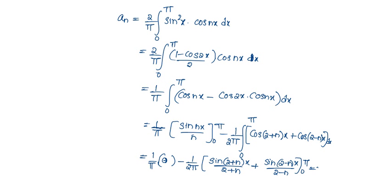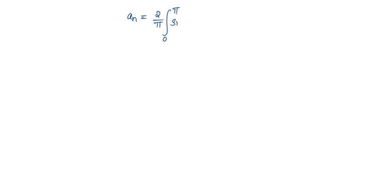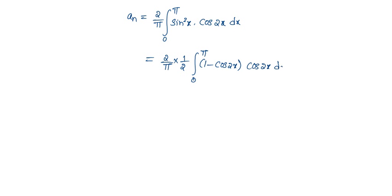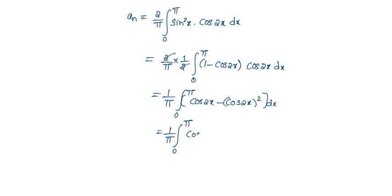For n = 2, a₂ = (2/π) integral from 0 to π of sin²x · cos2x dx = (2/π)(1/2) integral from 0 to π of (1 - cos2x) · cos2x dx. This simplifies to (1/π) integral from 0 to π of (cos2x - cos²2x) dx = (1/π) integral from 0 to π of cos2x - (cos4x + 1)/2 dx.